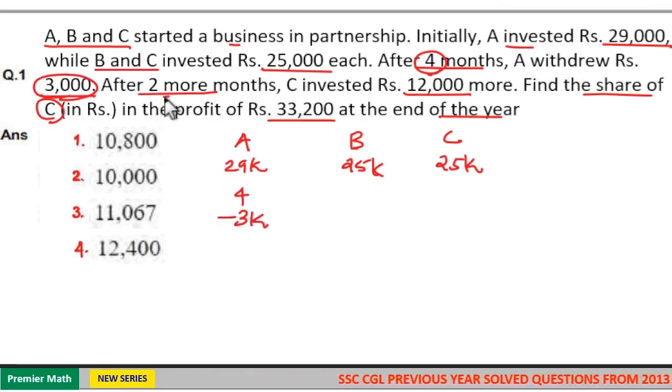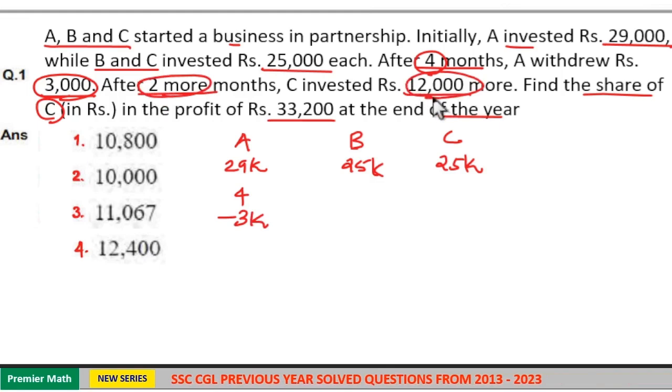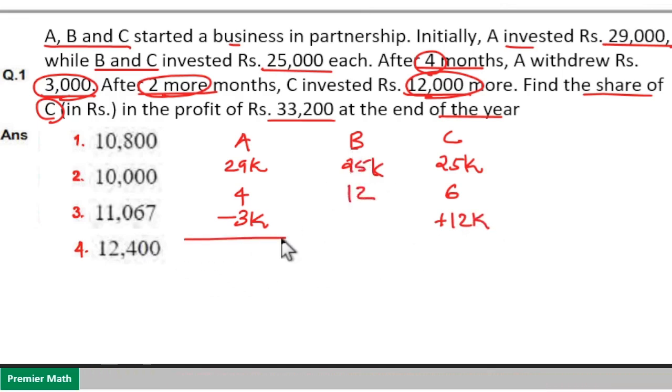After 2 more months C invested 12,000. 2 more months means after 6 months C invested 12,000 which means B invested for 12 months. Now take the ratio.